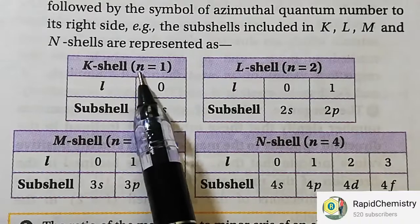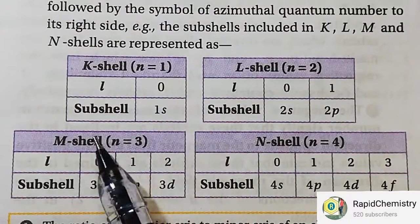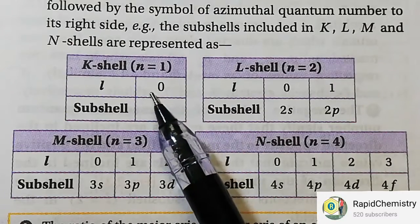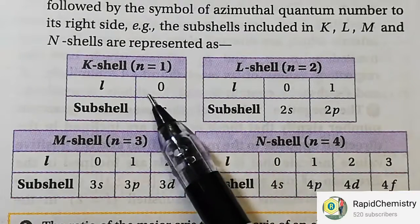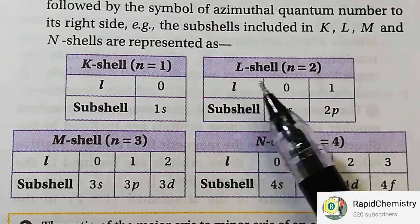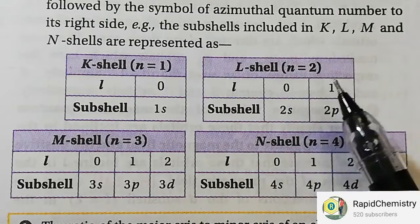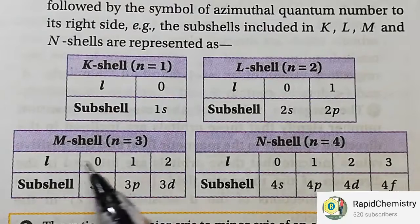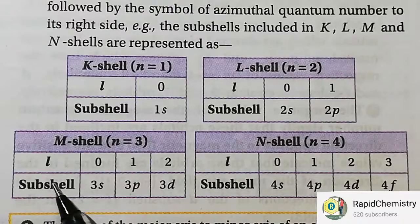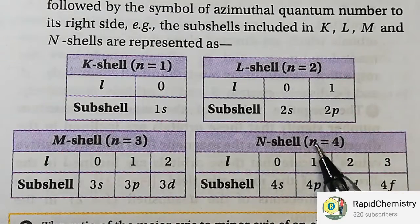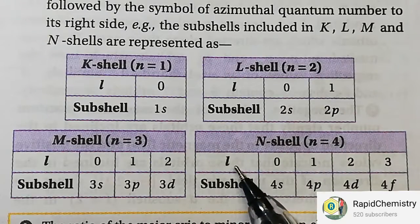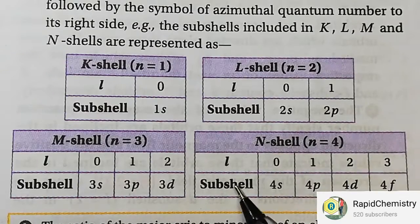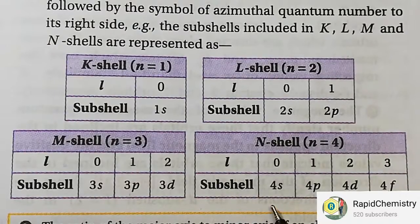For the K shell, N equals 1, there is only one subshell designated as 1S where L equals 0. For the L shell, N equals 2, L has values 0 and 1 — giving subshells 2S and 2P. For the M shell, N equals 3, L has values 0, 1, 2 — giving subshells 3S, 3P, and 3D. For the N shell, N equals 4, L has values 0, 1, 2, 3 — representing subshells 4S, 4P, 4D, and 4F. From the azimuthal quantum number we obtain the subshell concept.